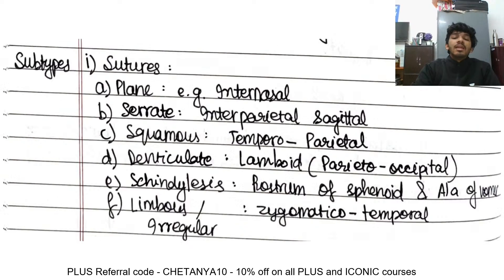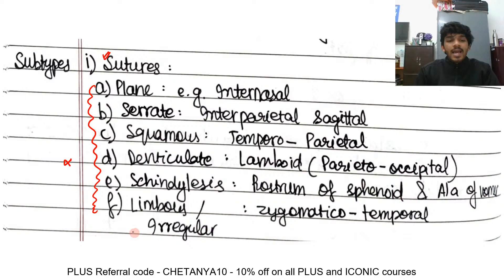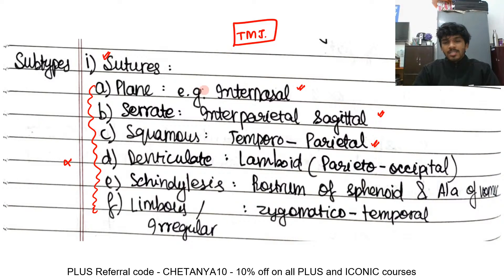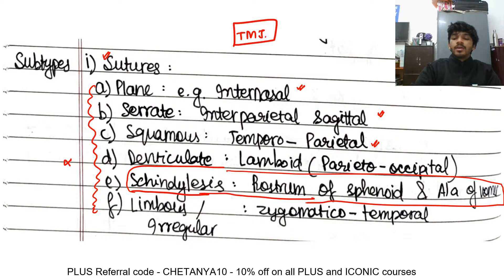Fibrous joints are bones joined by fibrous tissue and they are generally immovable. The first subtype is the suture, present in your cranium. You don't need to know each individual type in detail, but know that joints between large bones of the head and neck are mostly sutures — for example, the interparietal, temporoparietal, and parietal-occipital joints.